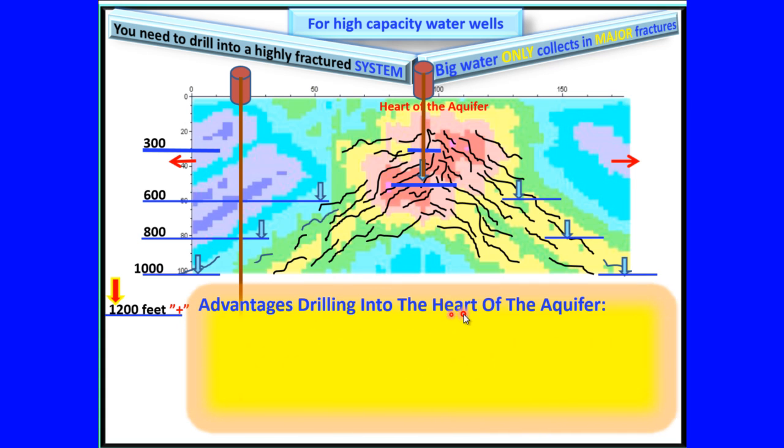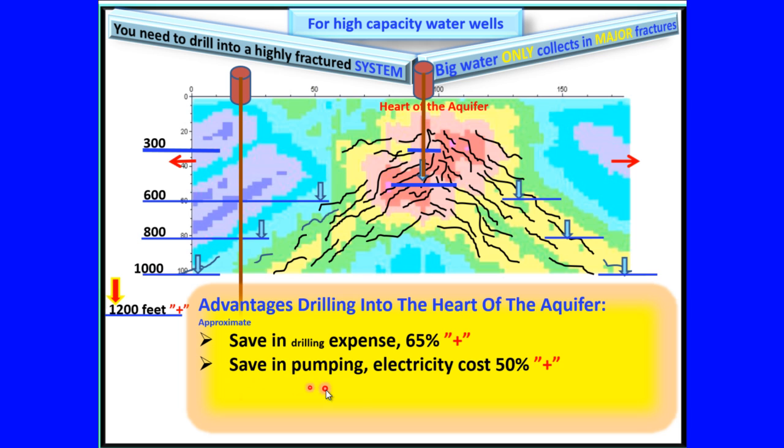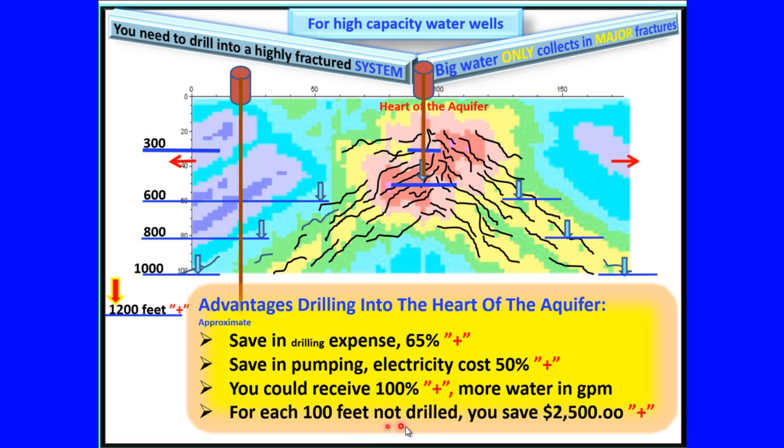Advantages drilling into the heart of the aquifer: Save in drilling expense, 65% plus. Save in pumping electricity costs, 50% plus. You could receive 100% plus more water in gallons per minute. For each 100 feet not drilled, you save $2500 plus.